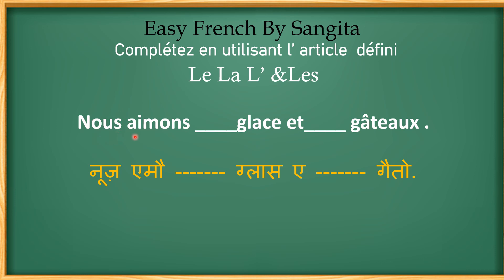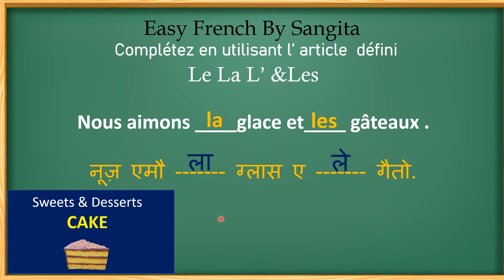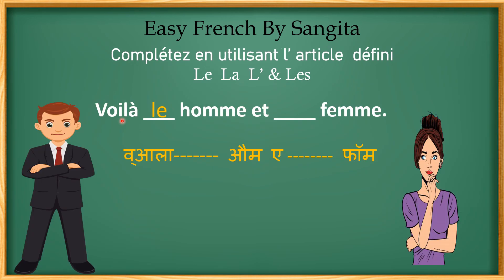The first sentence is: nous aimons ___ glace et ___ gâteaux. Glace means ice cream — it's feminine, so we put la: la glace. Gâteaux is plural, so without thinking about masculine or feminine, straight away put the plural article les. So: nous aimons la glace et les gâteaux — we like the ice cream and the cakes. There's also a video on sweets and desserts in the description box.